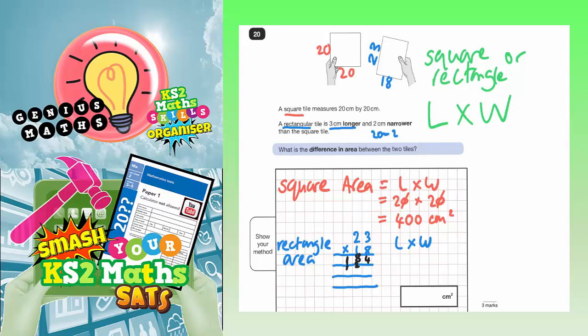Now we need to times everything by this 1 here. But this 1 doesn't mean 1, it means 10. So we put the magic zero in and then times everything by 1. So 1 times 3 is 3, and 1 times 2 is 2. So that makes 230.